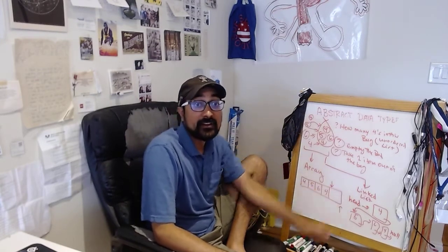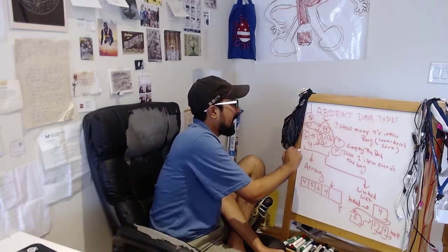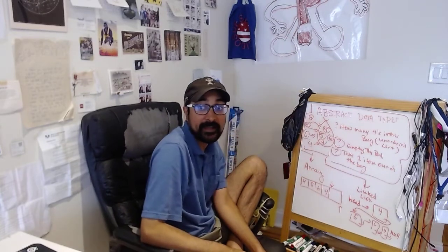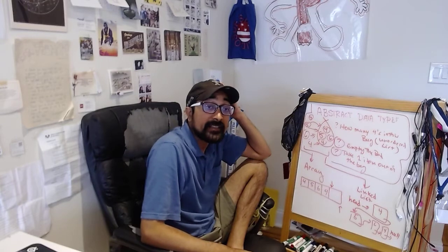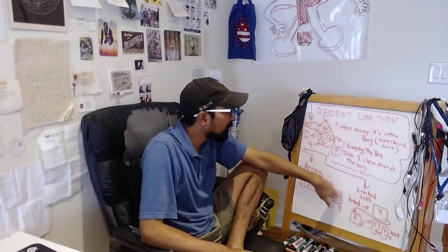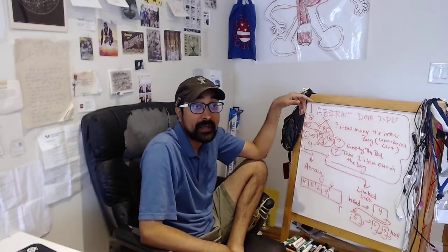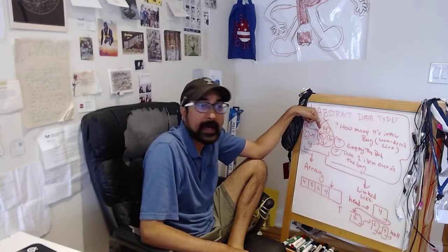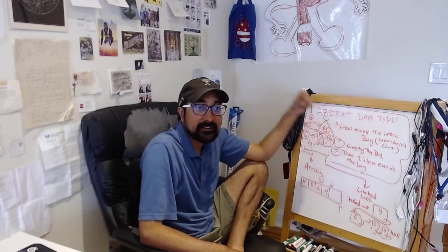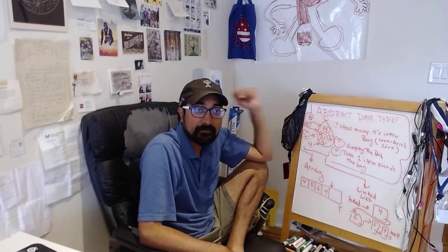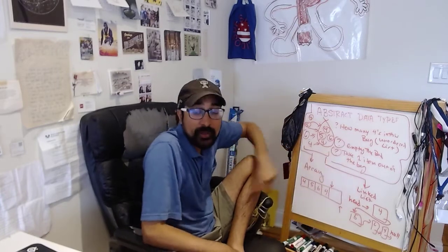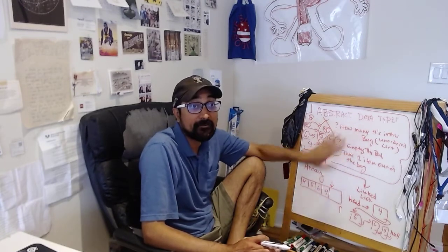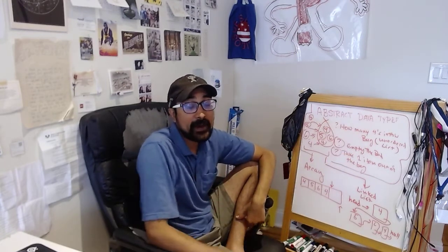Notice there are no implementation details exposed by the bag — that's why it's abstract. If someone is using our bag class, they don't need to know the implementation to use it. We'll program it one of these ways, and they'll just say 'I want to insert the number four into the bag' and we'll do it. They'll see the number four in there, but they won't know whether we used an array or a linked list — and they don't need to know. They just need to know the high-level functions. That's the power of abstract data types.